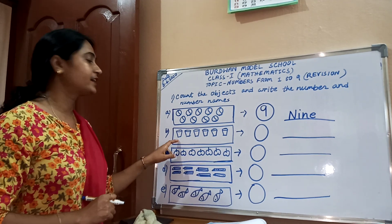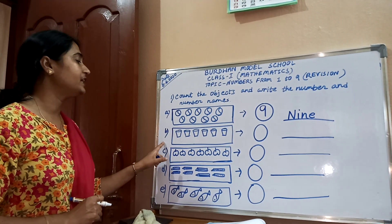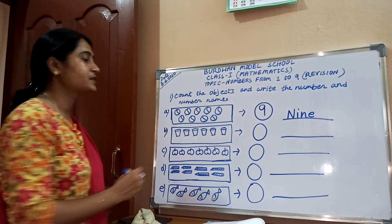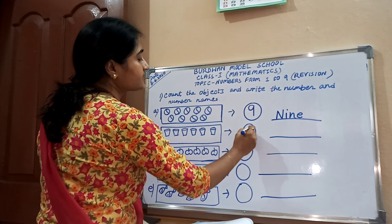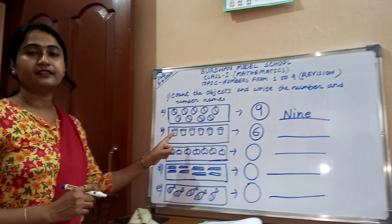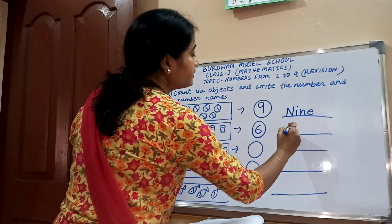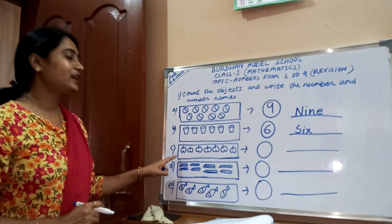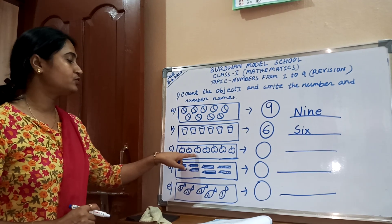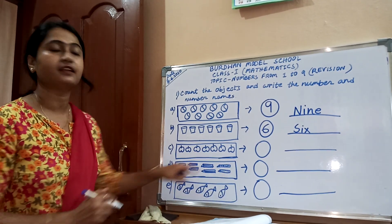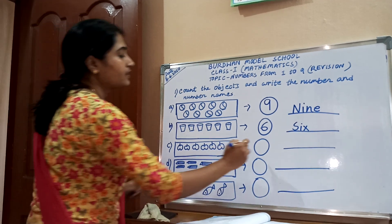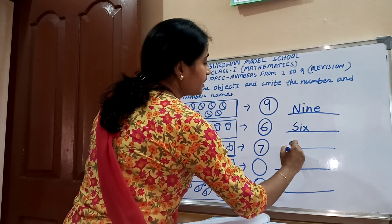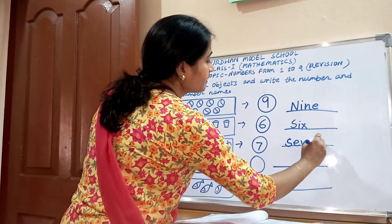Box number B — how many glasses? Count: one, two, three, four, five, six. There are six glasses. Write the number name: S-I-X. Box number C — how many apples? One, two, three, four, five, six, seven. Write 7 and number name: S-E-V-E-N.